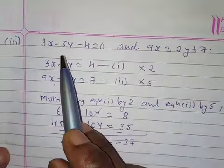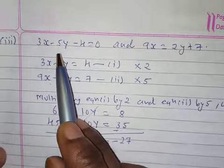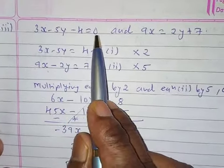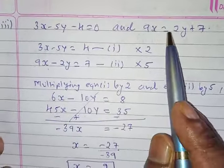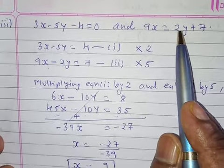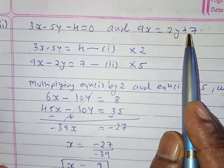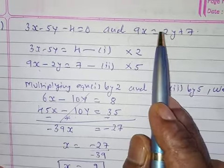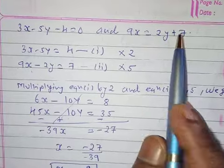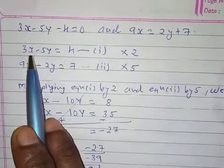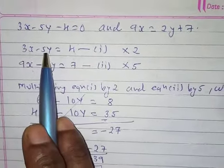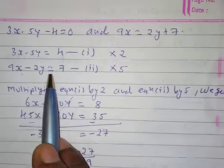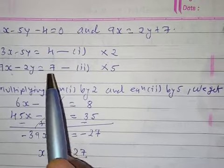Let's take one more example: 3x minus 5y minus 4 is equal to 0, and 9x is equal to 2y plus 7. First, rearrange into standard form. We get 3x minus 5y is equal to 4, and 9x minus 2y is equal to 7.